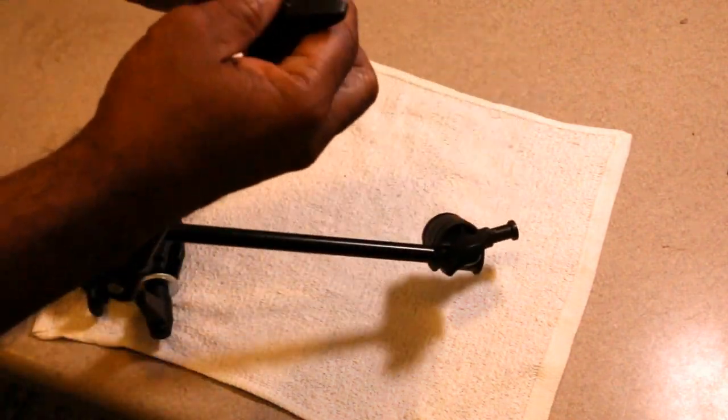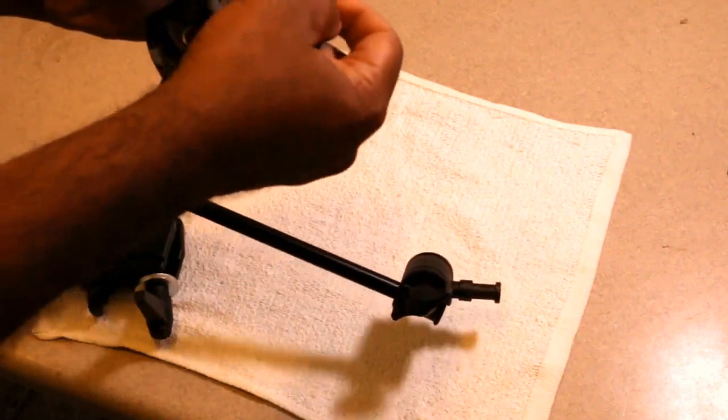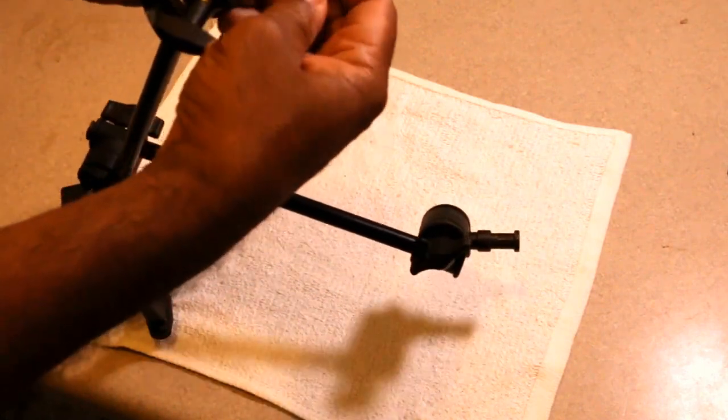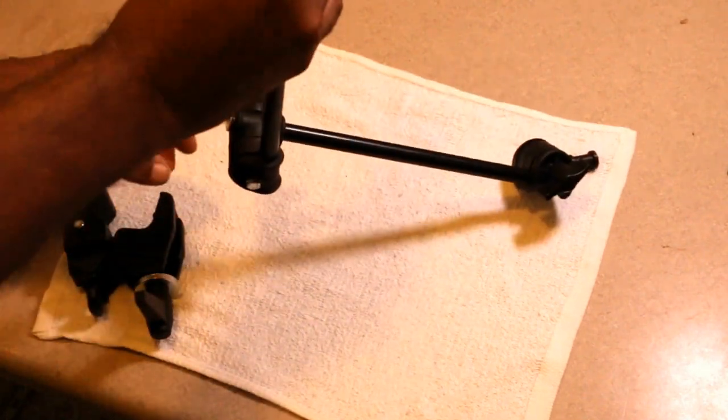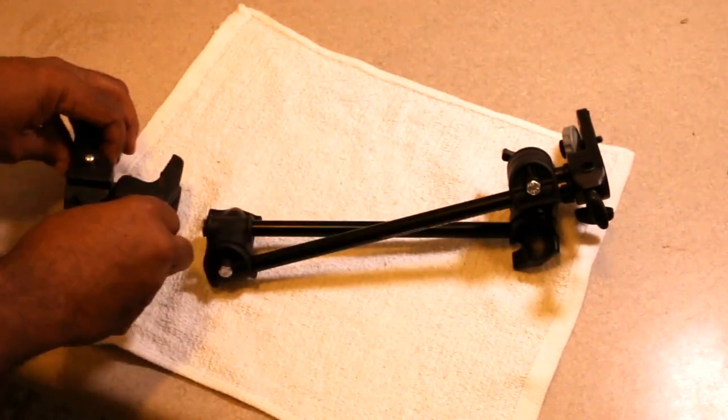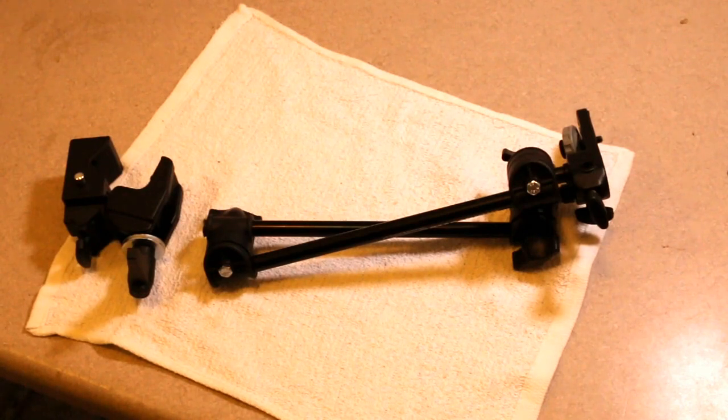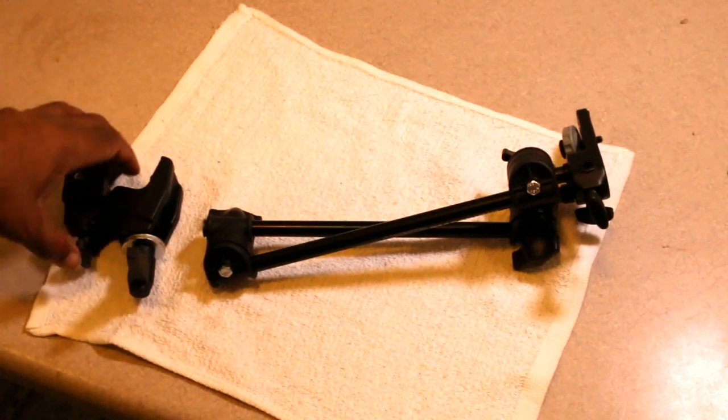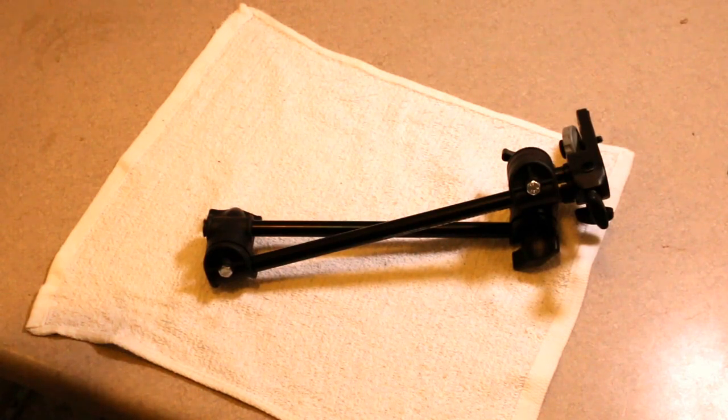These components come in two pieces. This is an attachment here that basically allows you to hold a camera. It's called a lighting arm as well, so you could put a light on this. Anything that would fit that particular screw type would be no problem.